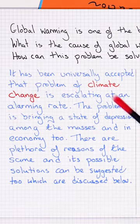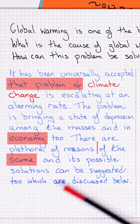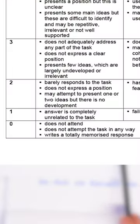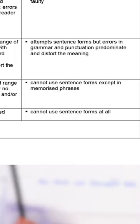Well, Student A by following the template has made several grammatical errors which will lower their score. They've also written a totally memorized response which will get you a band 0, and they cannot use sentence forms